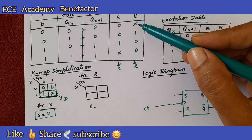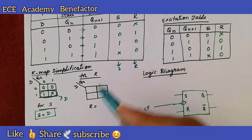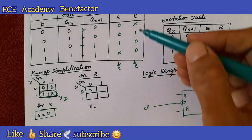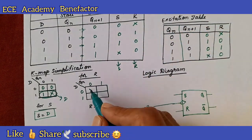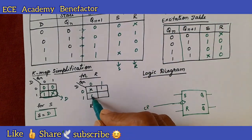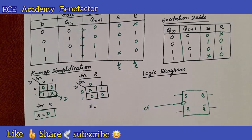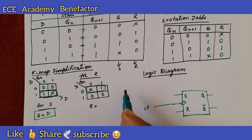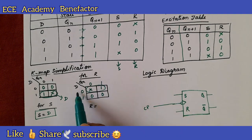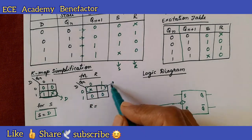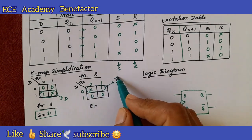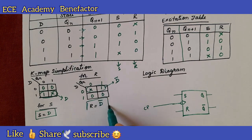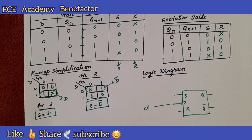Now let us fill the K-map for R. The R values are: x, 1, 0, 0. We can form a pair here. For this pair we look at the row where D = 0, which is D bar. Therefore, R = D bar.